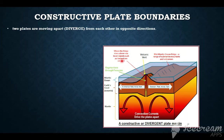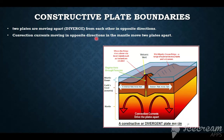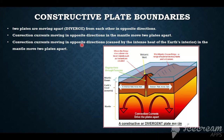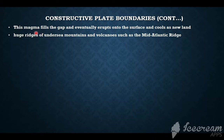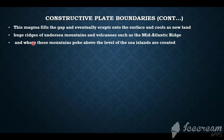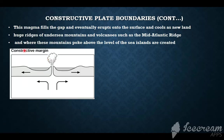Two plates are moving apart, diverging from each other in opposite directions. Convection currents moving in opposite directions because of intense heat in the interior move the two plates apart. The magma fills the gap and eventually erupts onto the surface and cools as new land. Huge ridges of undersea mountains and volcanoes such as the Mid-Atlantic Ridge are an example of this. Where these mountains poke above the level of the sea, island arcs are created.